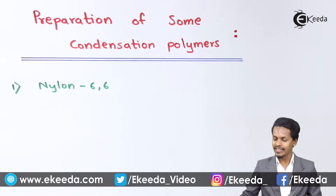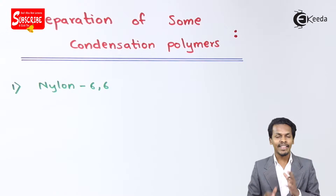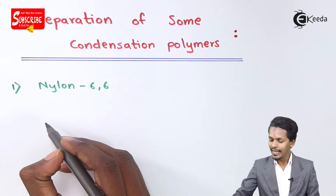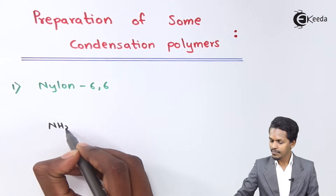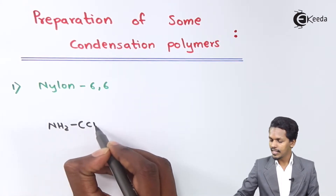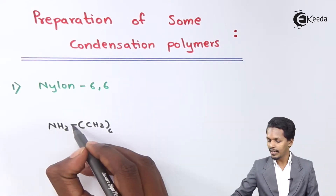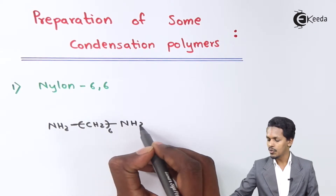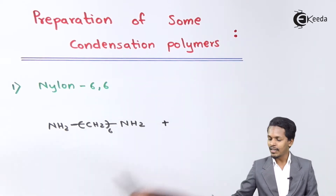The first condensation polymer we will discuss is nylon 6,6. To prepare nylon 6,6 we use two different monomers. The first monomer is hexamethylene diamine, which has the structure NH2-(CH2)6-NH2, with six methylene groups attached between two NH2 groups.